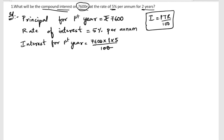Now we can cancel the two zeros. So 76 into 5: 5 sixes are 30, 5 sevens are 35 plus 3 is 38 — so rupees 380 is the interest for the first year.